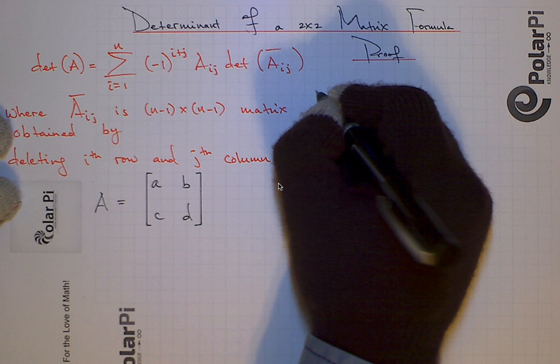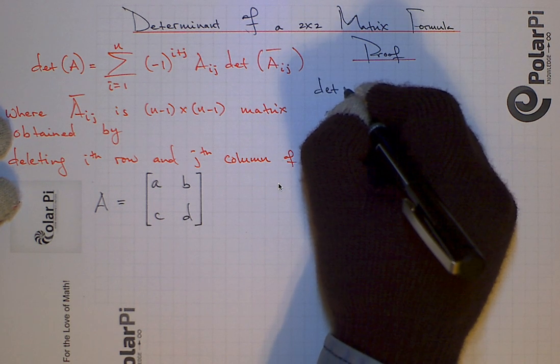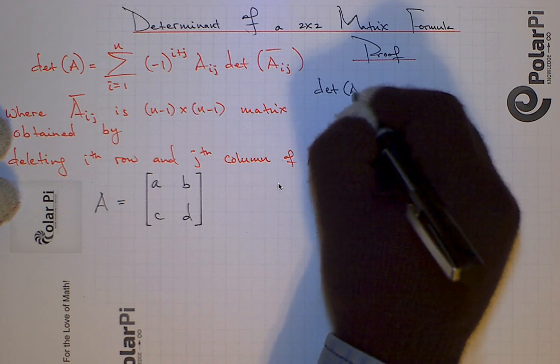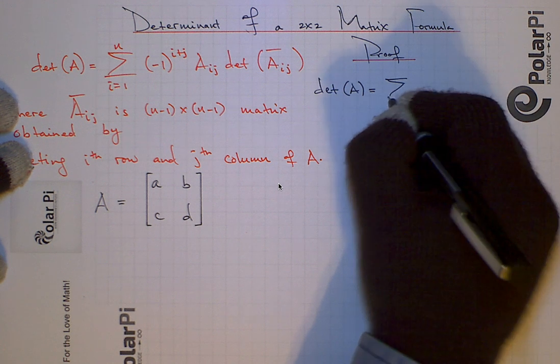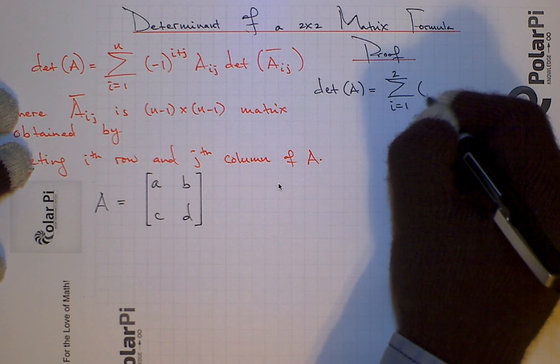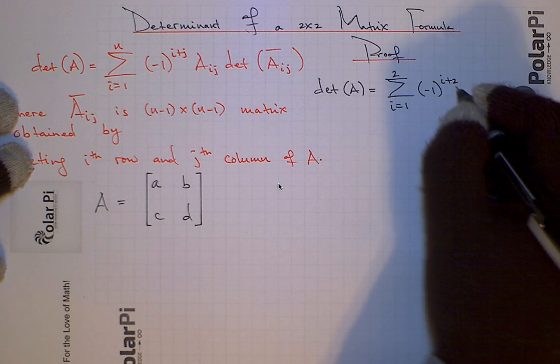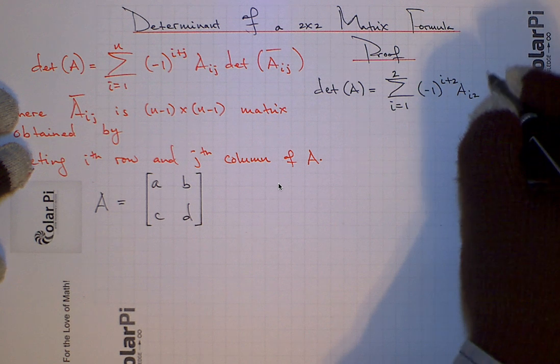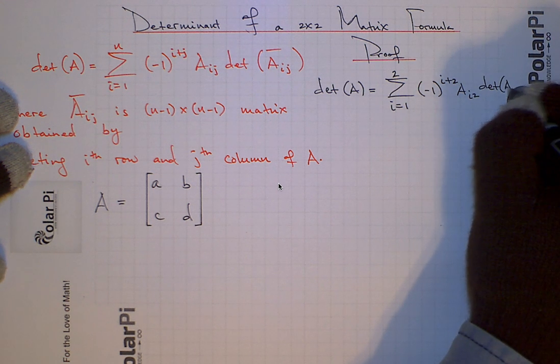So then in our particular case, n is 2 and we fixed the second column. So J is also 2, and so we've got the determinant of A is going to equal, for this matrix A, is going to equal the sum from I equals 1 to 2.